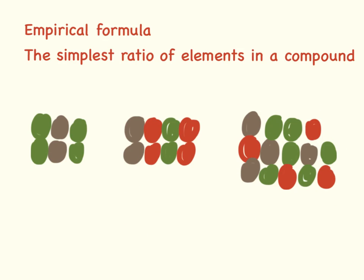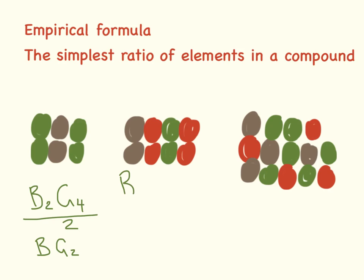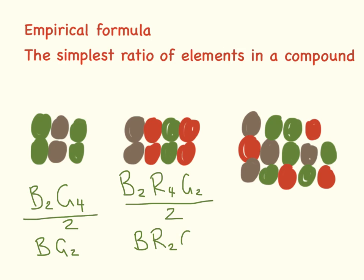Empirical formulas can get quite complicated. Here we have brown 2, green 4. The smallest number we can divide these by is 2, so the empirical formula is brown, green 2. Here we have brown 2, red 4, green 2. The smallest number we can divide these by is 2, so our empirical formula is brown, red 2, green.